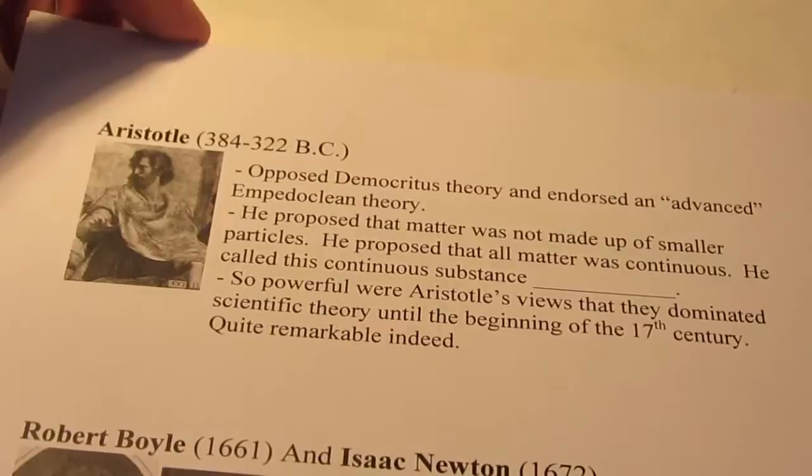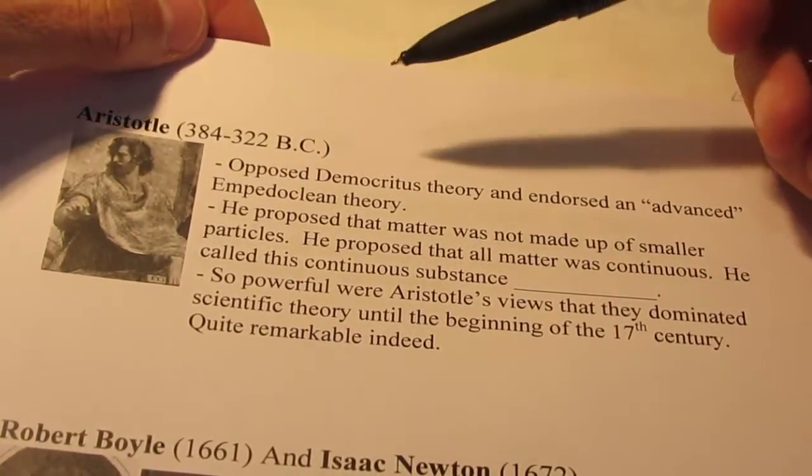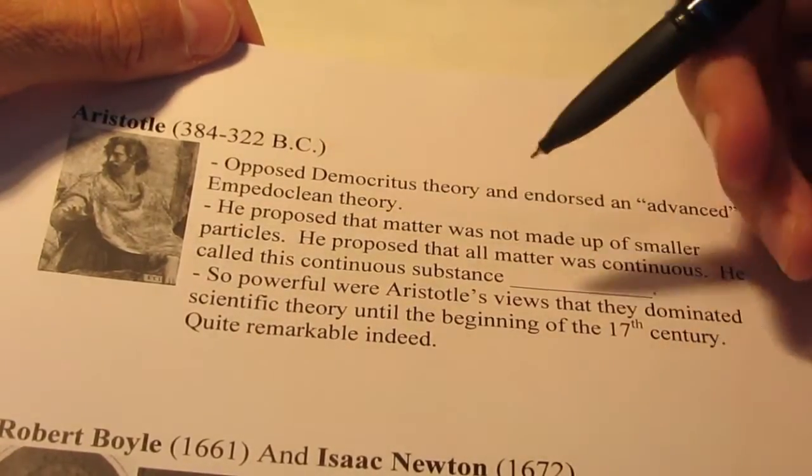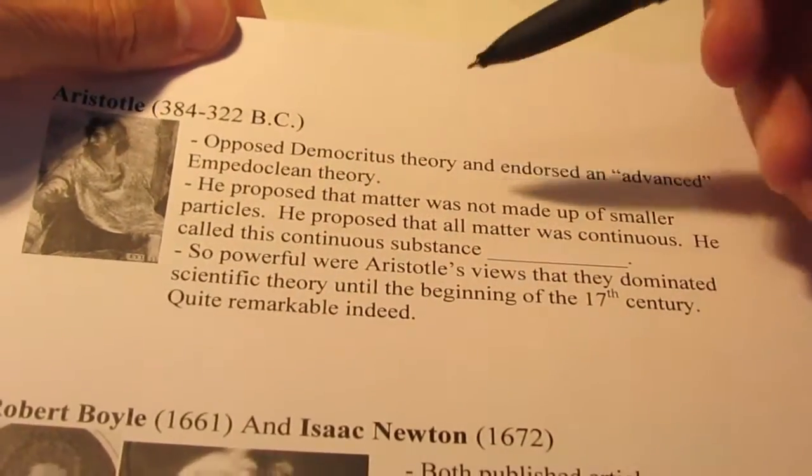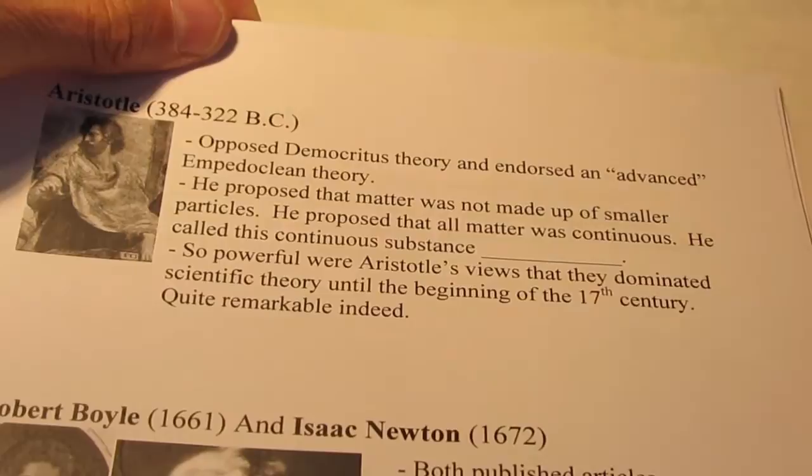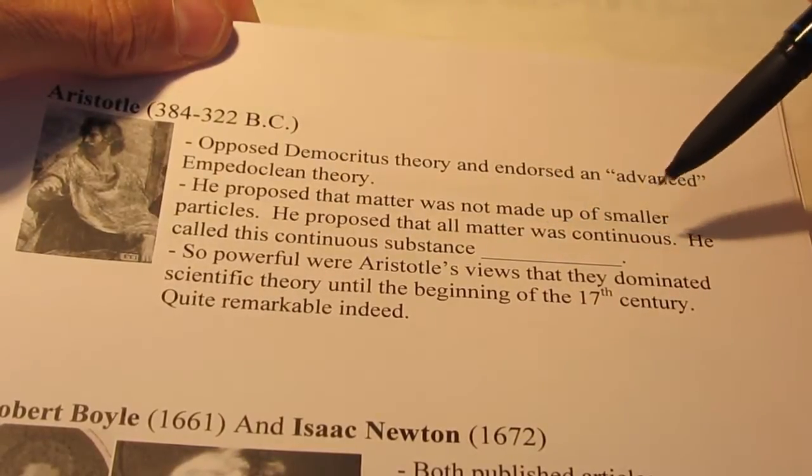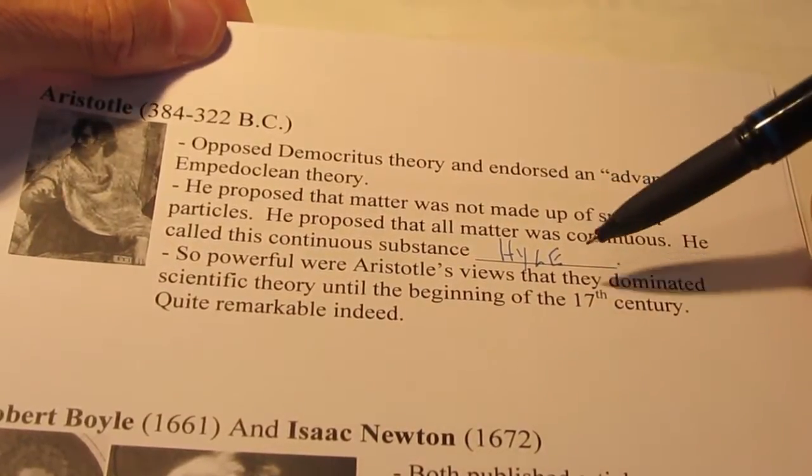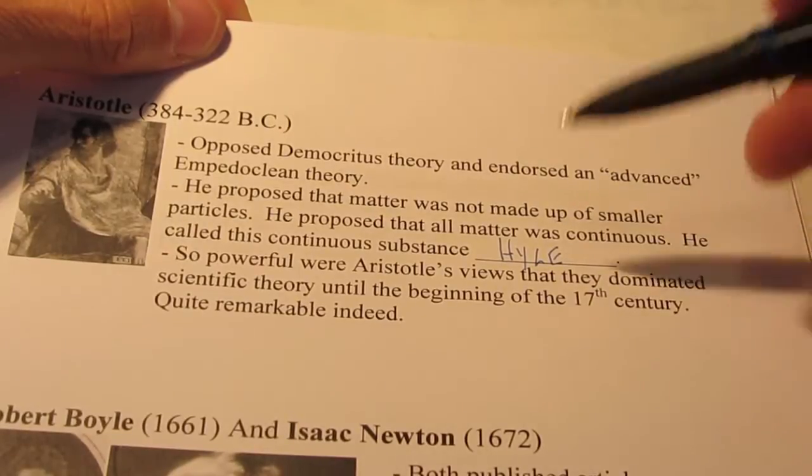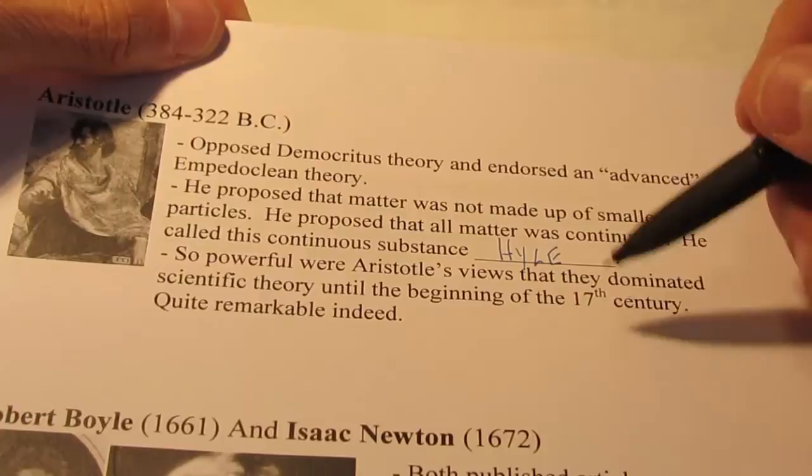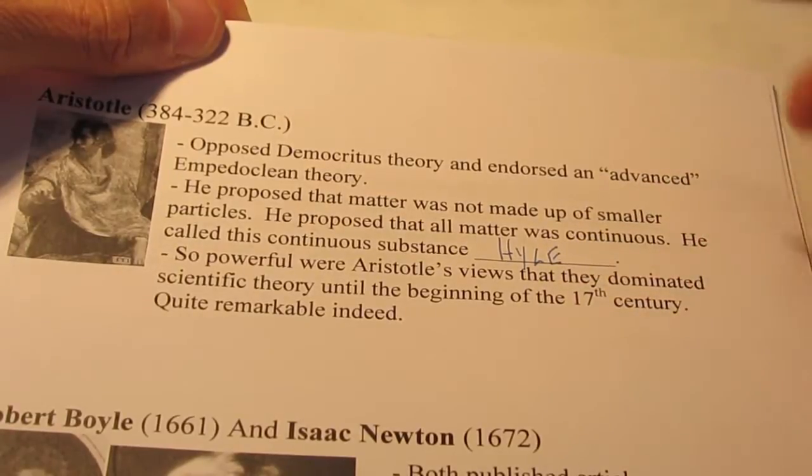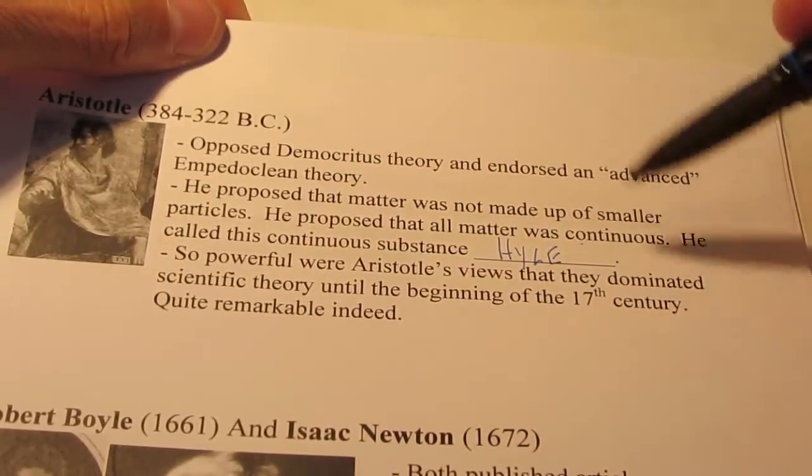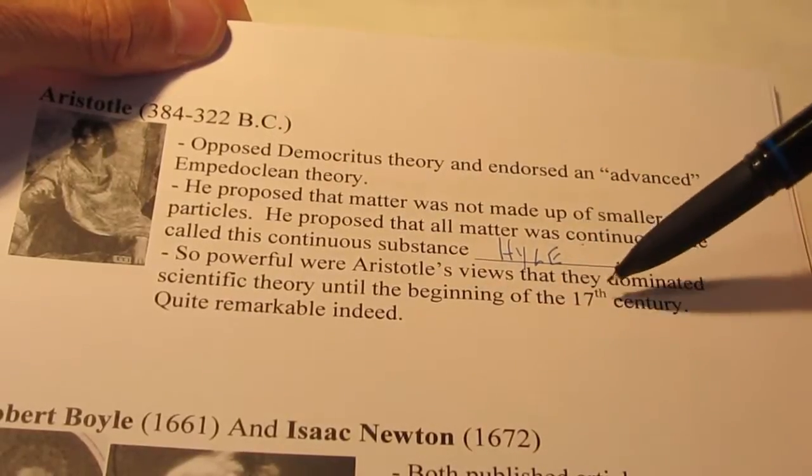Once again, around that same time still, the philosopher Aristotle lived. And he opposed the Democritus theory and he endorsed an advanced Empedoclean theory. He proposed that matter was not made up of smaller particles. He proposed that all matter was continuous. He called this substance hyl. And hyl could change from one form of matter to another. It could change from earth into fire, or it could change from water into vapor or wind. Now so powerful were Aristotle's views that they dominated scientific theory until the beginning of the 17th century.